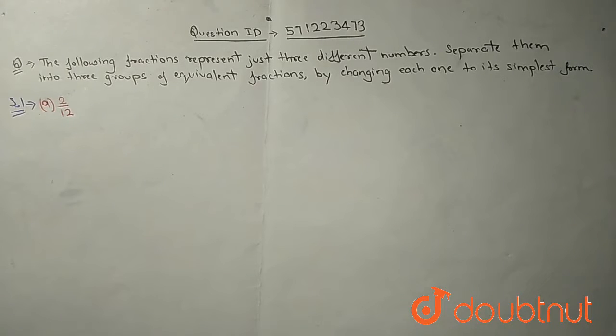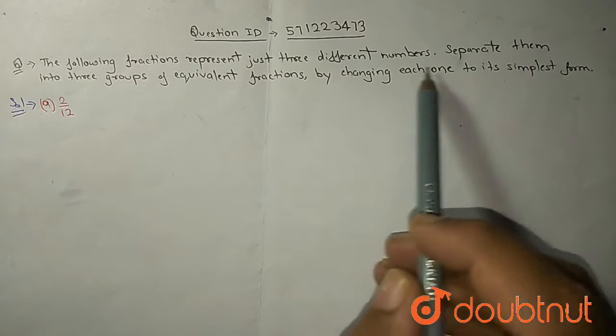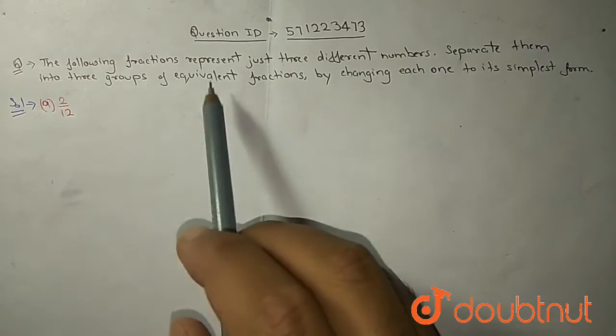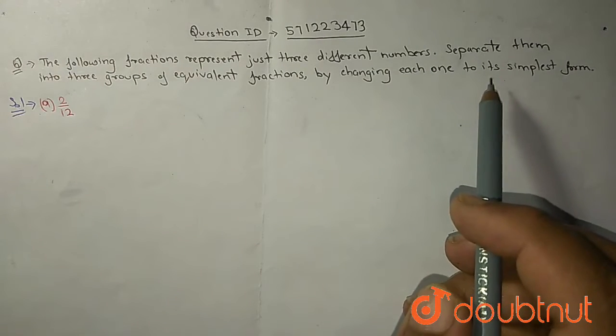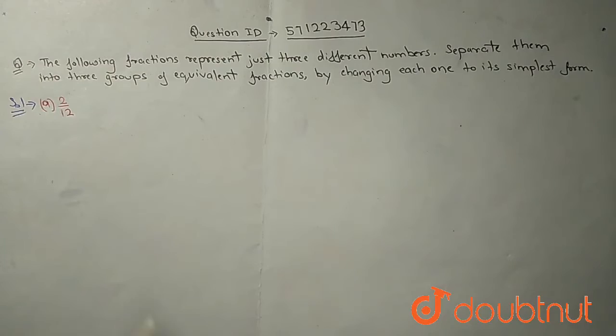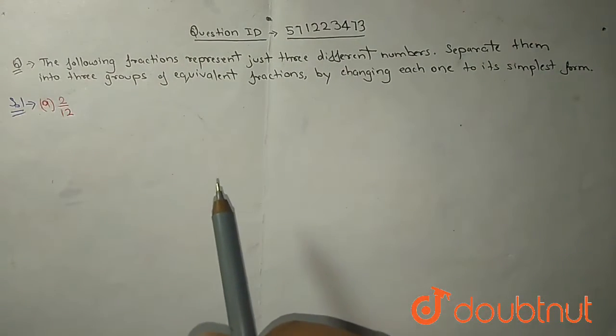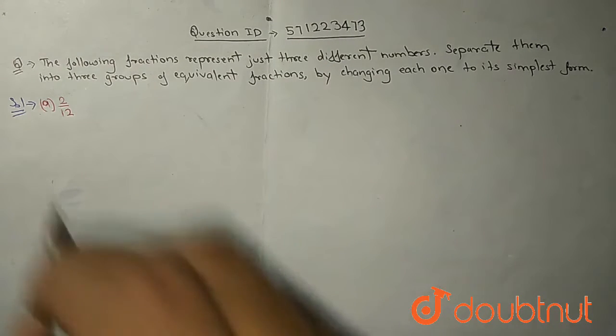Today we will solve the question from the fraction. The question is the following fractions represent just three different numbers. Separate them into three different groups of equivalent fractions by changing each one to its simplest form. In this question we have to simplify the fractions. Very easy question. Let's see how to solve this.